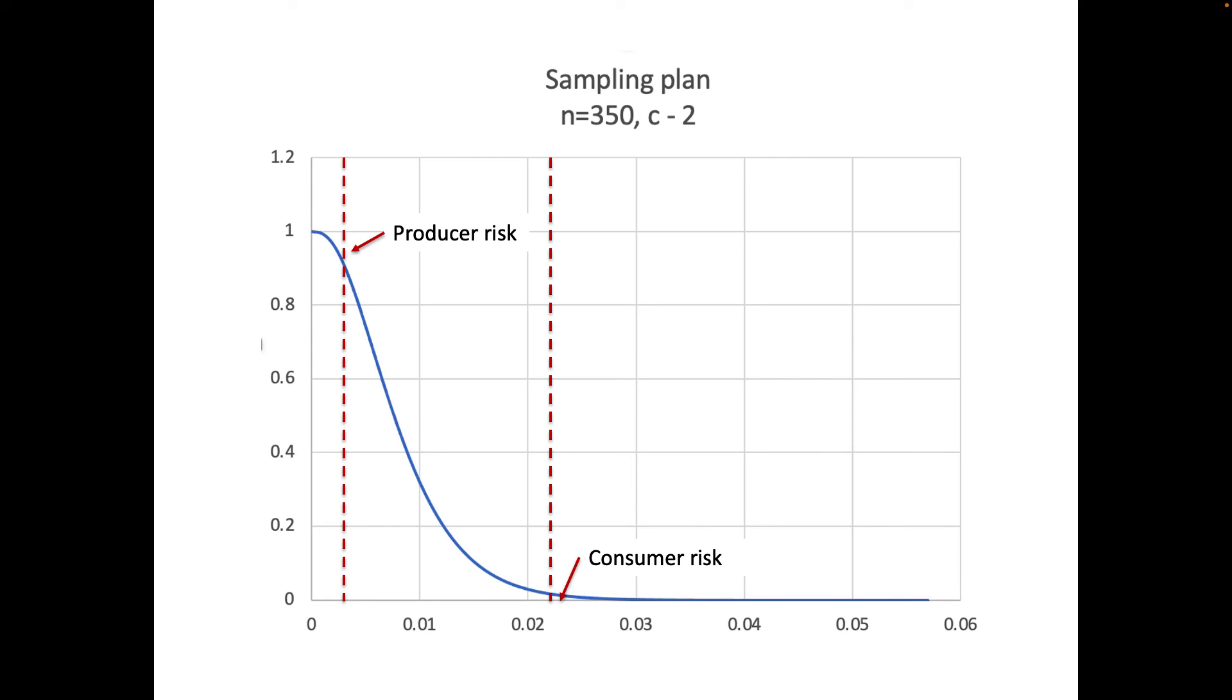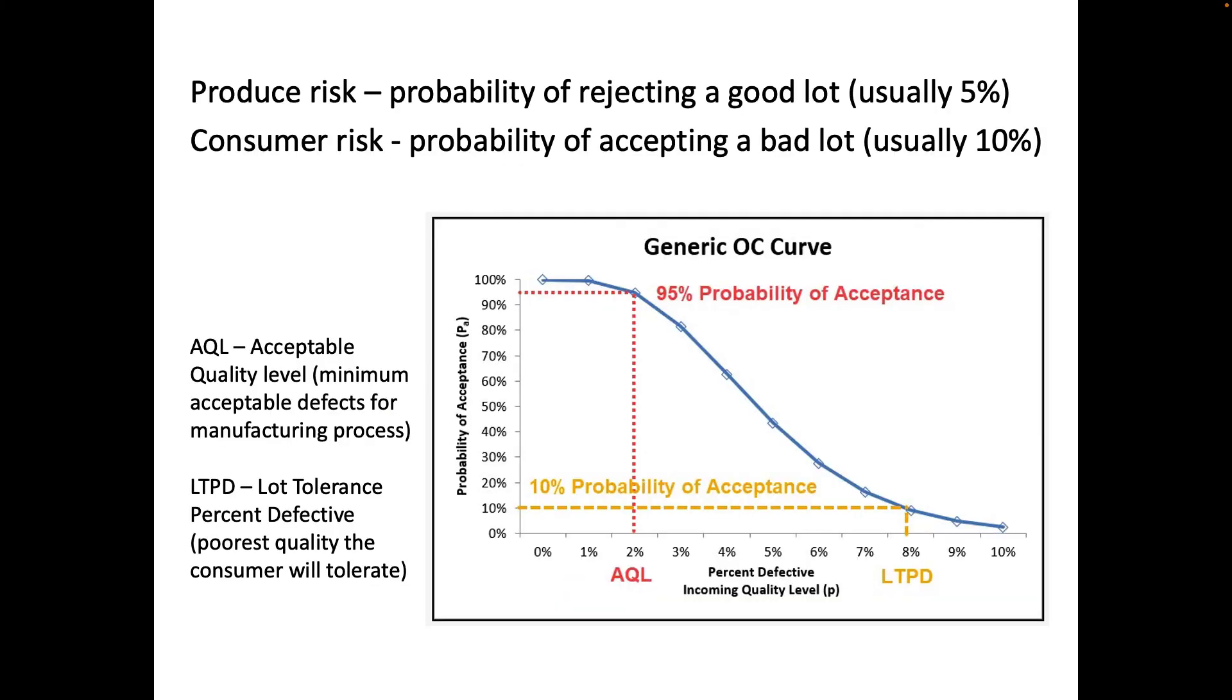What we try to do is design a sampling plan where we have design specifications that we are willing to accept where the producer risk or the probability of rejecting a good lot and the consumer risk which is the probability of accepting a bad lot, that those are kind of minimized within our design specs. The way we do that is to define AQL and LTPD to try to decide where are our design specifications going to be okay. We often use 95% probability of acceptance for the AQL and for the lot tolerance for percent defective we often accept a 10% probability for that. So that's just a rule of thumb that we go by when we're doing that.